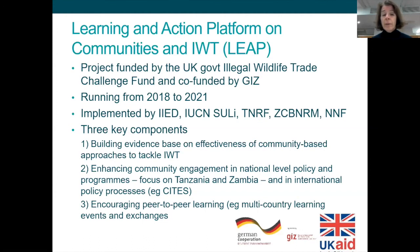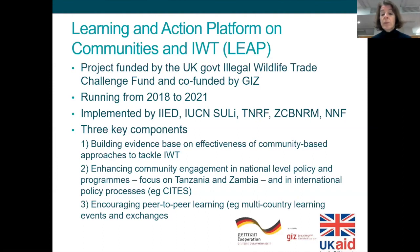The project has three key components. The first is around building the evidence base on the effectiveness of community-based approaches to tackling illegal wildlife trade. The second is about enhancing community engagement in national level policy and programmes, with a specific focus on Tanzania and Zambia. We're also working on enhancing community engagement in international policy processes, including CITES and the intergovernmental illegal wildlife trade conferences. The third component is encouraging peer-to-peer learning between communities and between countries through multi-country learning events and exchanges.